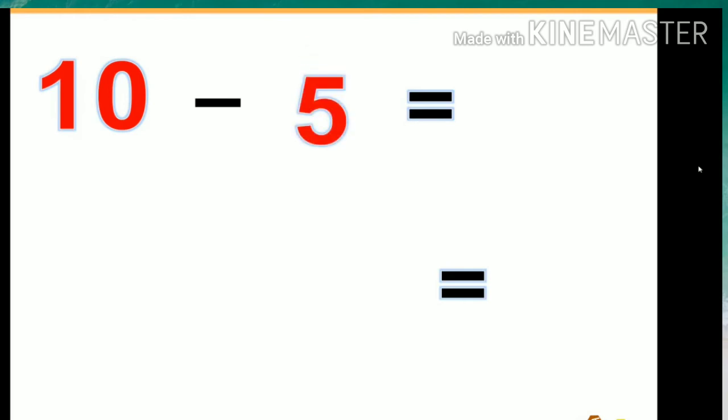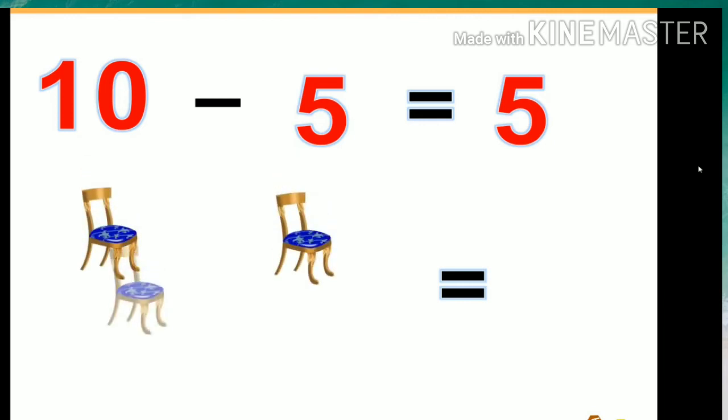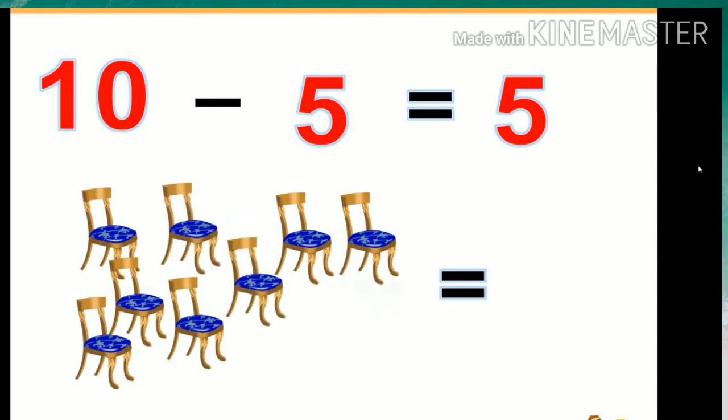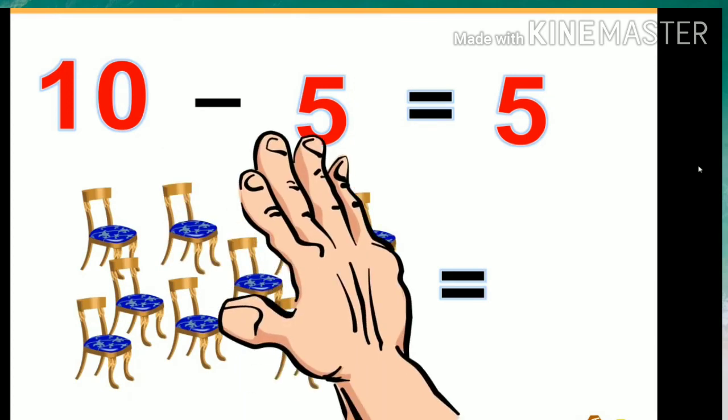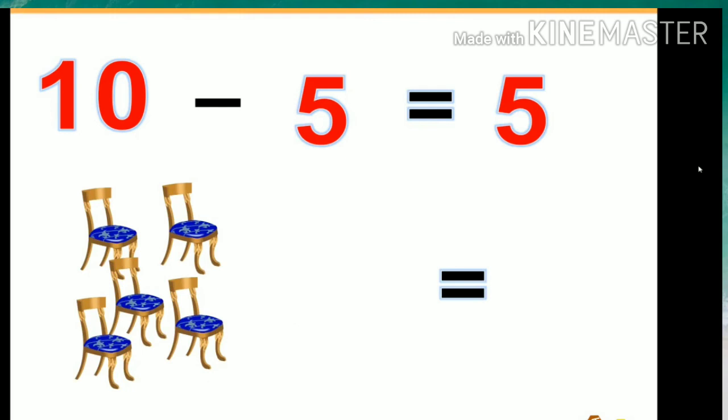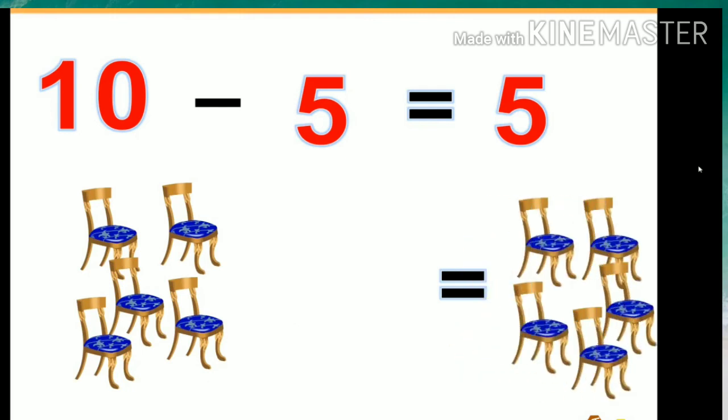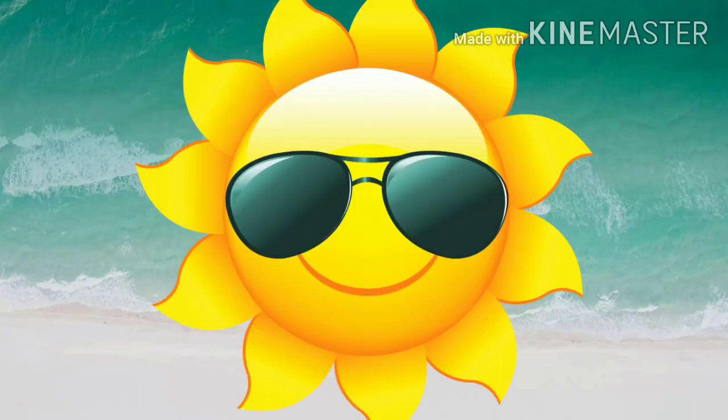10 minus 5 equals 5. We have ten chairs, and if we take away five of those chairs, we only have five chairs left.